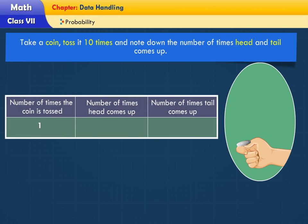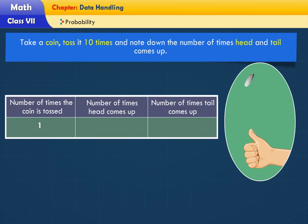Take a coin, toss it ten times, and note down the number of times head and tail comes up. Let's observe the following.